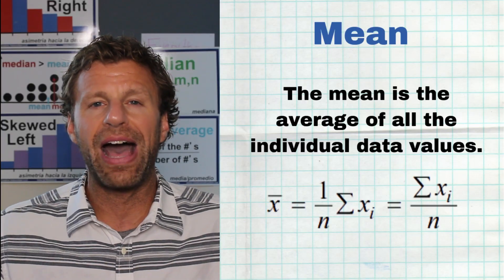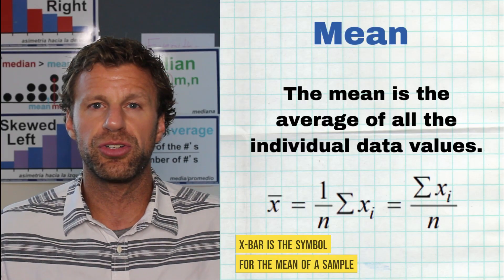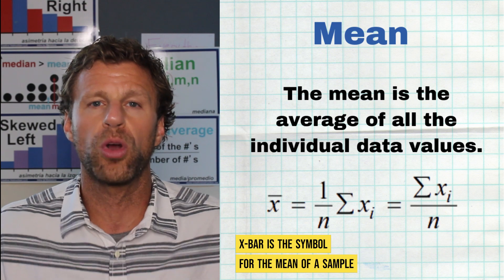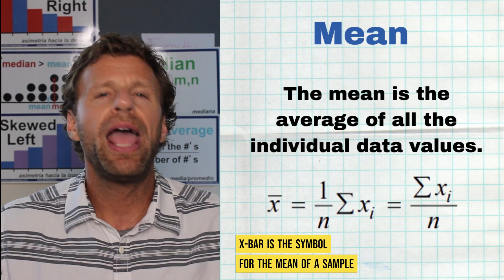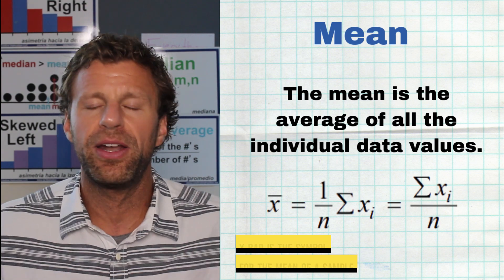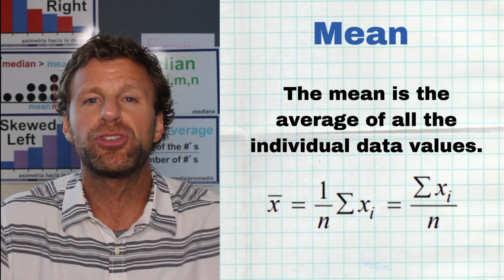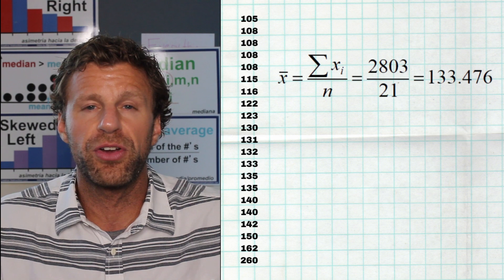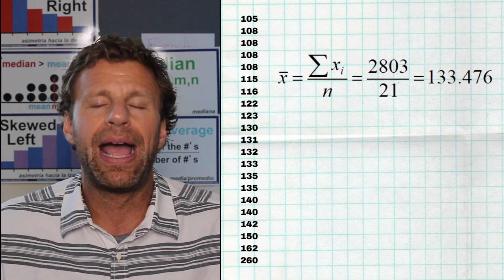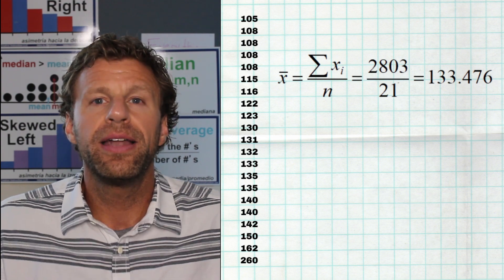The second measure of center for quantitative data is, of course, the mean. Everybody knows how to find the mean — how to find the average. You simply add all of your data values together and divide by how many data values you have.